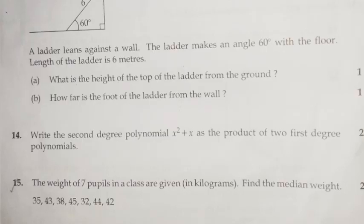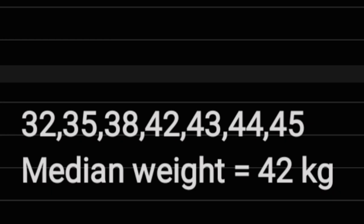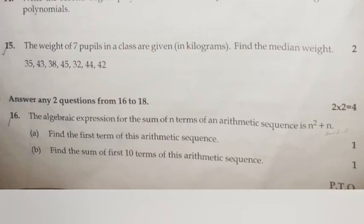Question 15: The weight of seven pupils in a class are given in kilograms. Find the median weight: 35, 43, 38, 45, 32, 44, 42. Answer: In ascending order: 32, 35, 38, 42, 43, 44, 45. Median weight equals 42 kg.